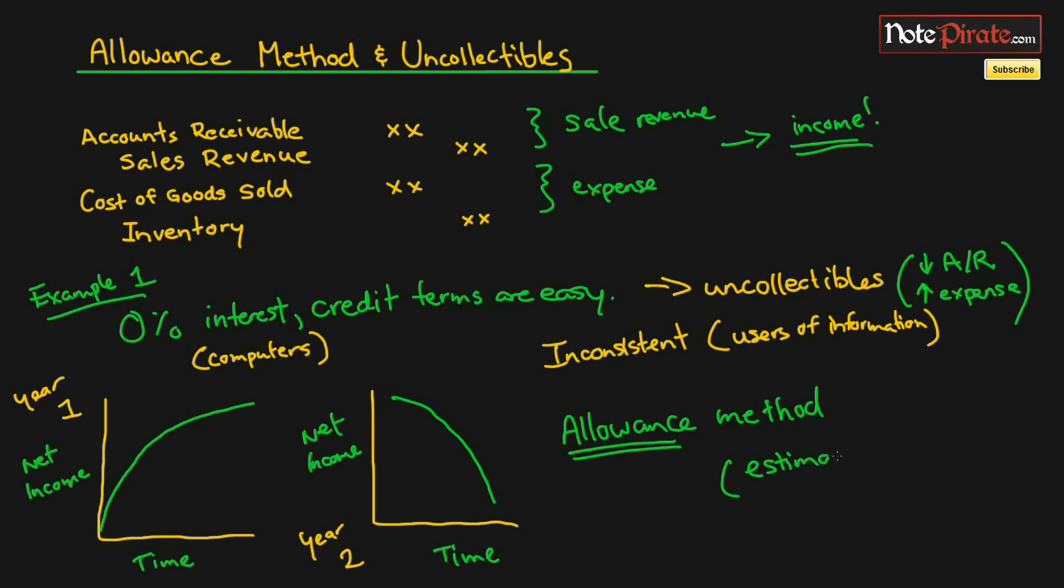It's basically going to create an allowance to show that we have a certain amount of estimated bad debts. When we estimate a certain amount of bad debts, we're basically going to be incurring an expense in year one and an expense in year two rather than just one huge expense in year two. That way our earnings will be more consistent or it will essentially smooth the earnings.